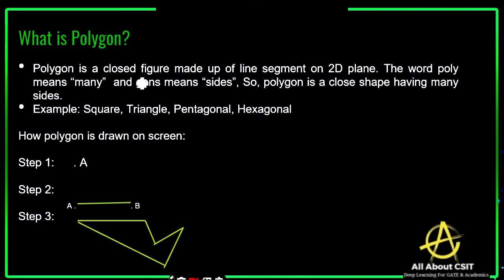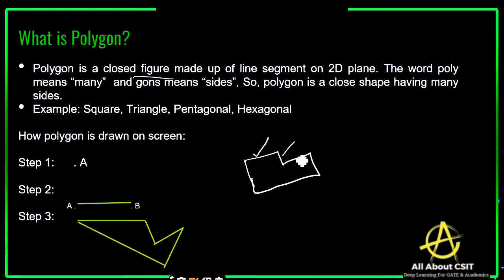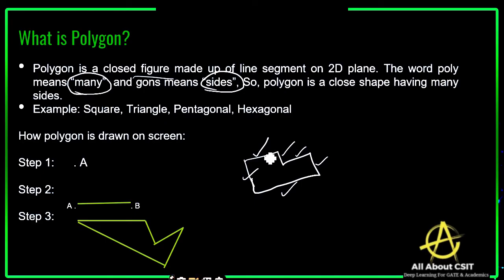A polygon means it's a closed figure — remember it is a closed figure — any type of shape, a closed figure made up of line segments on a 2D plane. The word 'poly' means many and 'gons' means sides. If you observe this polygon, you can see that many sides are present. That's why we call it a polygon — a polygon consisting of many sides.